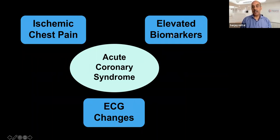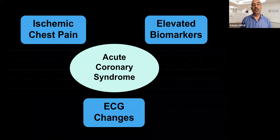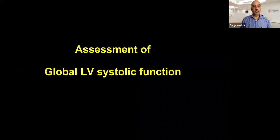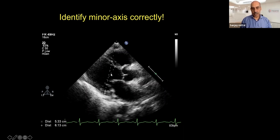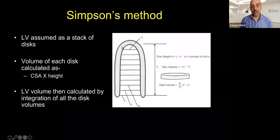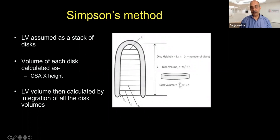A brief word about strain rate imaging for coronary artery disease. The ventricle has complex motion: shortening in short axis, longitudinal movement with base and apex moving toward each other, and a twisting/wringing effect — the base rotating counterclockwise and the apex clockwise — like wringing out a cloth. This wringing effect is not captured by ejection fraction alone. These three complex motions can be assessed by strain rate imaging.